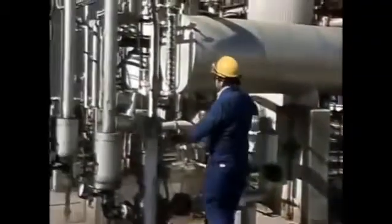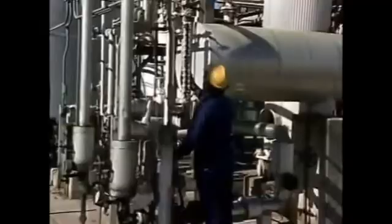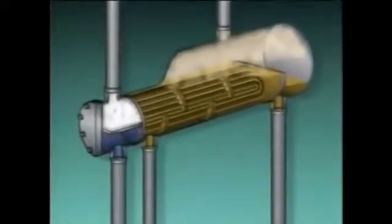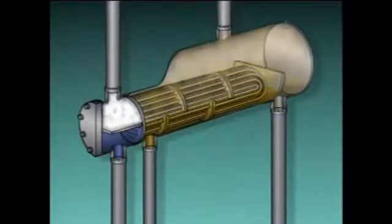One important check that should be made is the level in the reboiler. This check is made by observing the level in the reboiler's sight glass. The tubes in a reboiler must be covered with the process liquid. If the level in the reboiler drops too low, the tubes could overheat and be damaged. On the other hand, a level that is too high can be a problem, too.